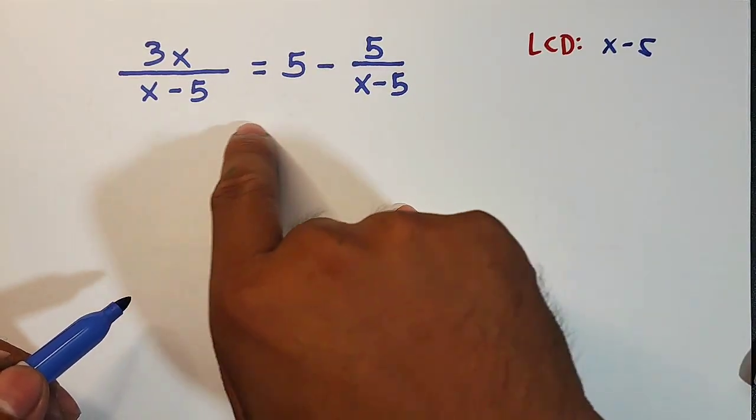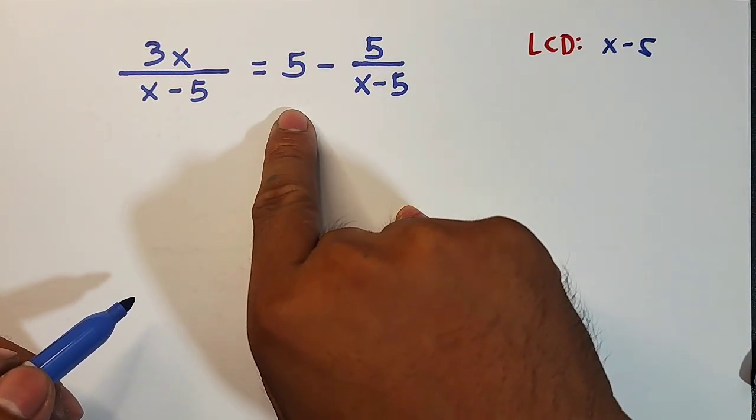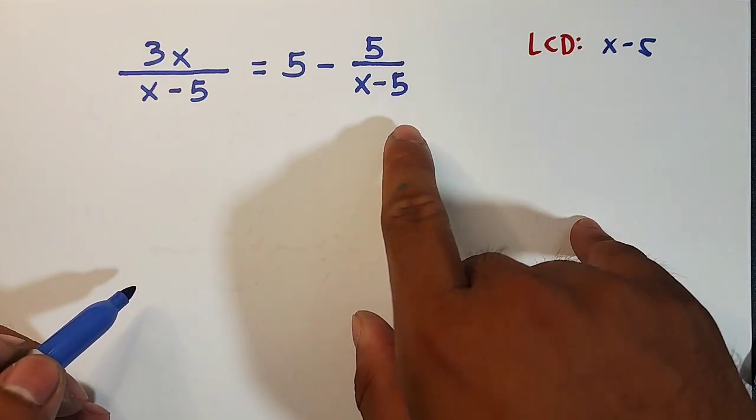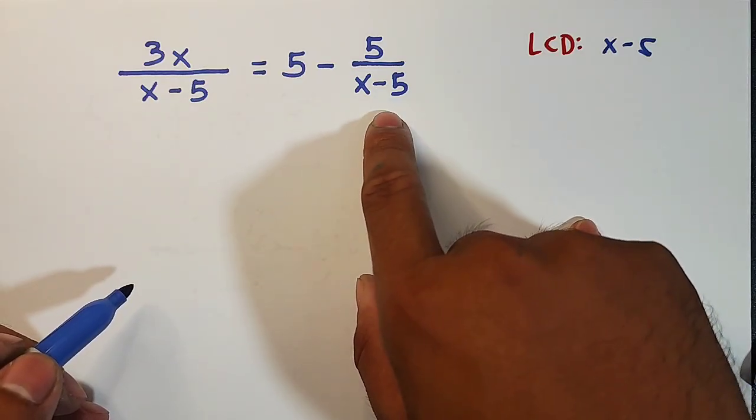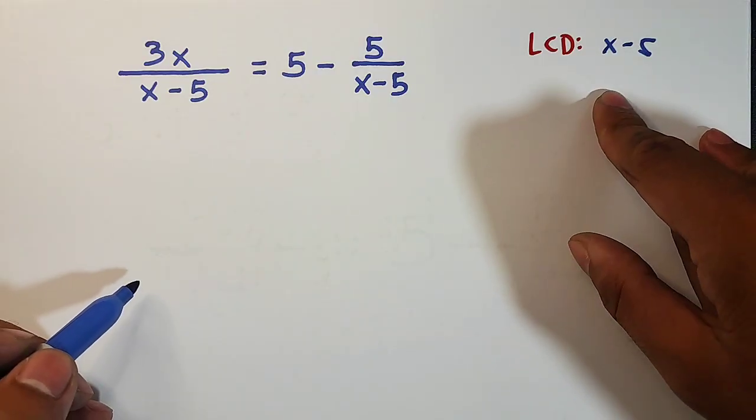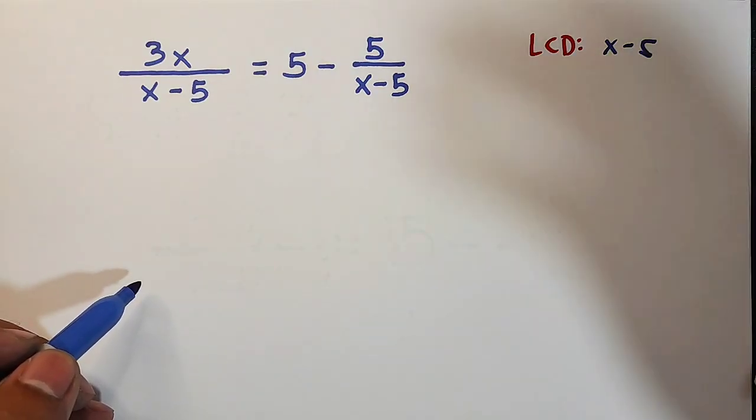Because we only have x minus 5, we have here invisible 1 as your denominator, and we also have here another x minus 5. So in other words, your LCD is simply x minus 5.